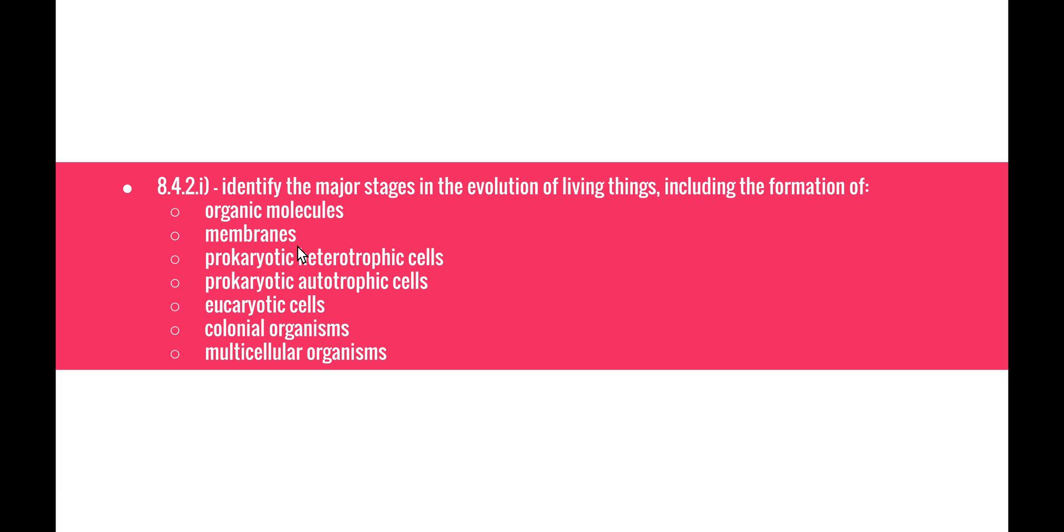Welcome to the next series in the Evolution Unit. This video will be looking at Life on Earth dot point 8.4.2 number 1, identify the major stages in the evolution of living things, including the formation of organic molecules, membranes, prokaryotic heterotrophic cells, prokaryotic autotrophic cells, eukaryotic cells, colonial organisms, and multicellular organisms.